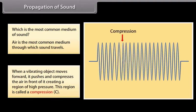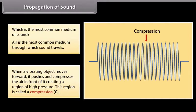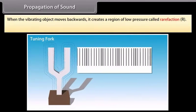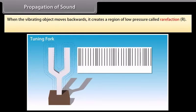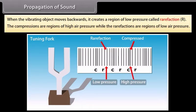When a vibrating object moves forward, it pushes and compresses the air in front of it, creating a region of high pressure. This region is called a compression. And when the vibrating object moves backwards, it creates a region of low pressure called rarefaction. The compressions are regions of high air pressure while the rarefactions are regions of low air pressure. Look at this image. It shows a sound wave created by a tuning fork and propagated through the air in an open tube. These are the regions of compression and these are the regions of rarefaction.